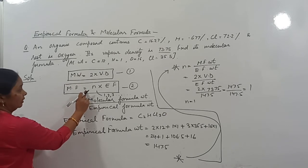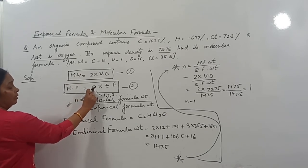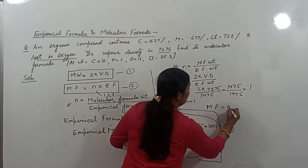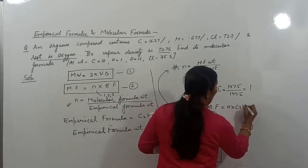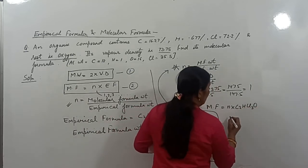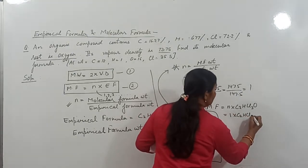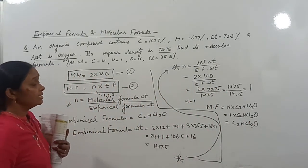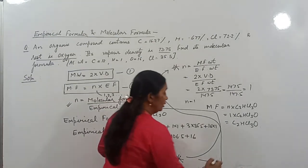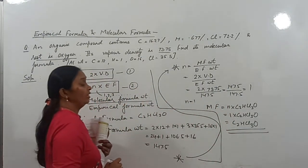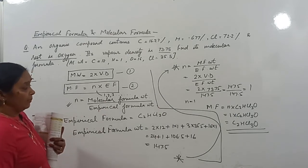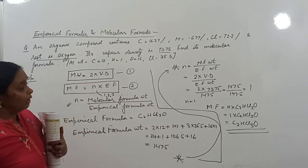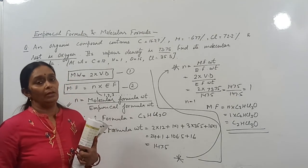Now we put n into the second equation: molecular formula = n × empirical formula = 1 × C₂HCl₃O = C₂HCl₃O. Since the value of n is 1, the empirical formula and molecular formula are the same here. If n had been different, the molecular formula would have been different.